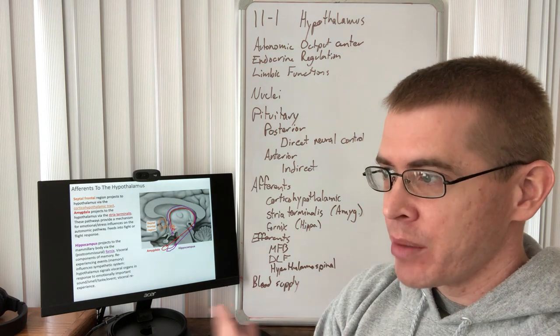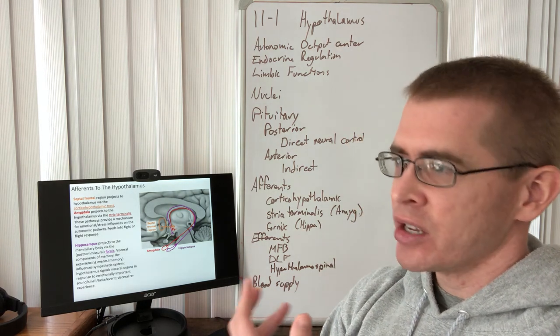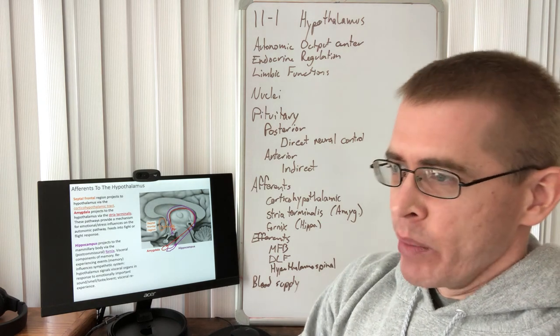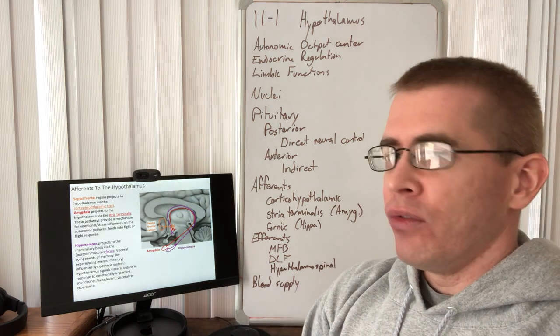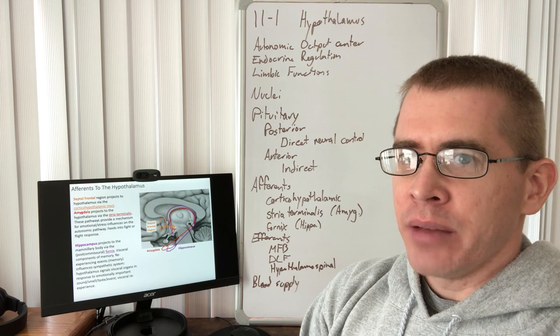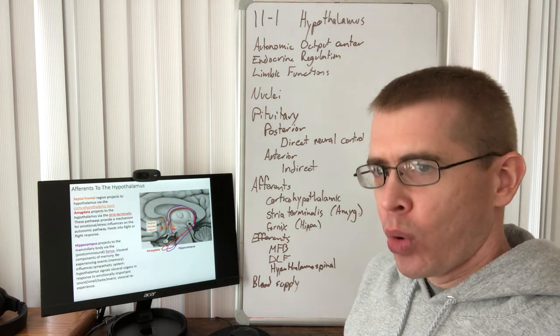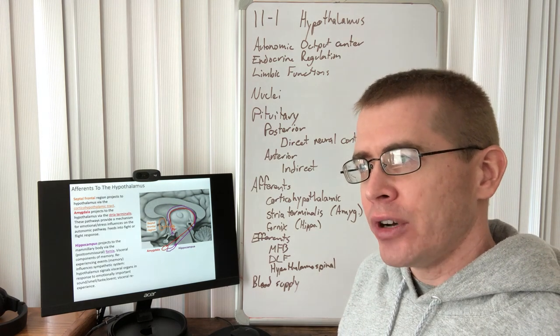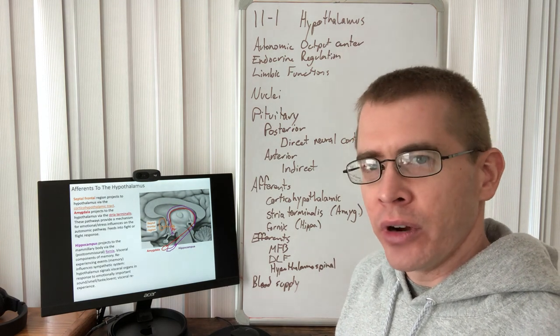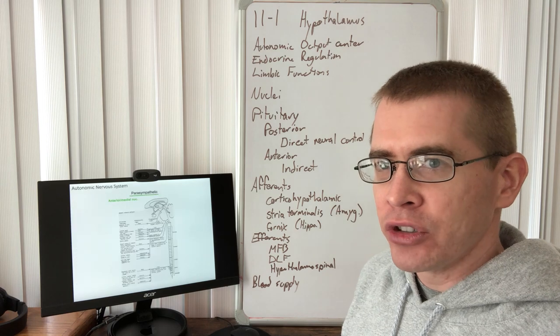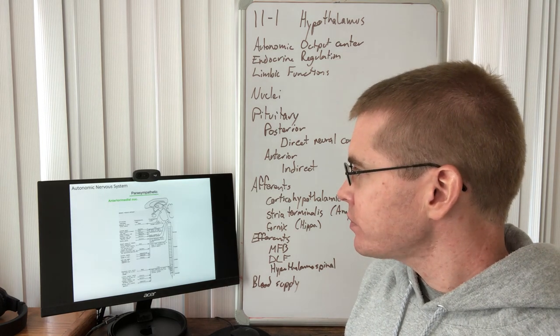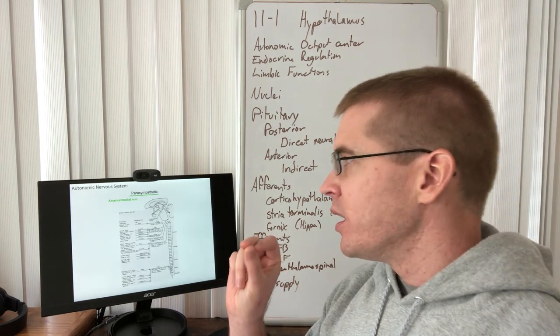Or if we have a negative type of memory, then it causes us to, when we think of it, we want to avoid that, the same events that led to that memory. So these are very important functions related to memory and our proclivities to relive those memories.